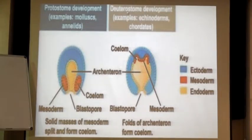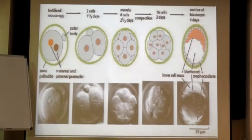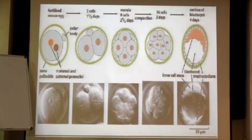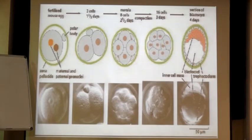Protostomia and Deuterostomia — these divisions are based on what kind of schizocoelmate or enterocoelmate condition the organisms are going to have. Now, going to your basics before we go further — you need to understand what gastrula is and how the blastopore is coming and how the mesoderms are coming. So I am moving into a little part of embryology so you can understand where exactly blastula, gastrula, coelmates and everything are coming from.